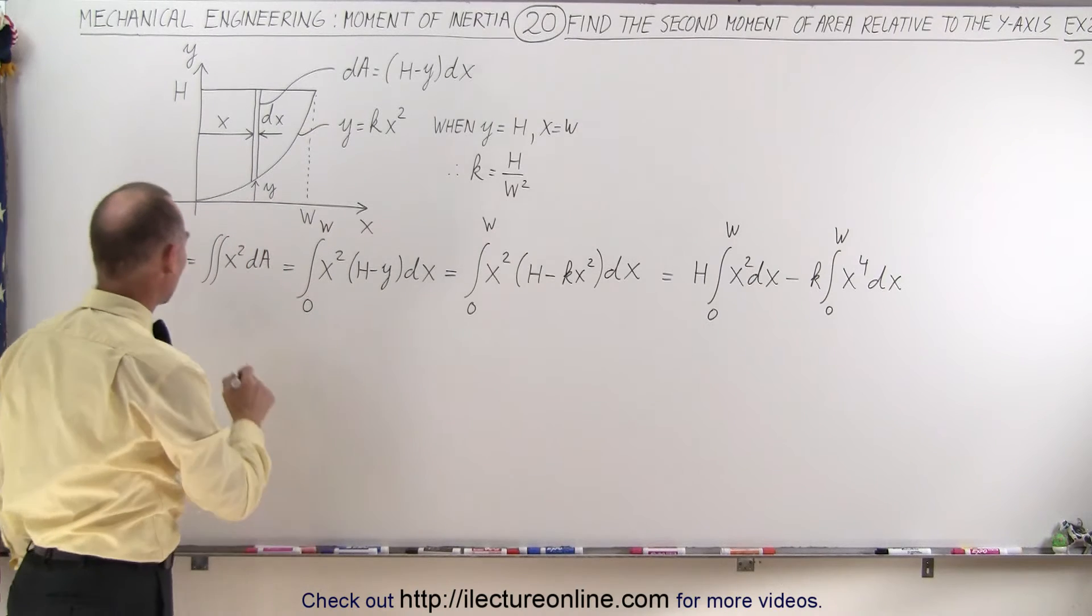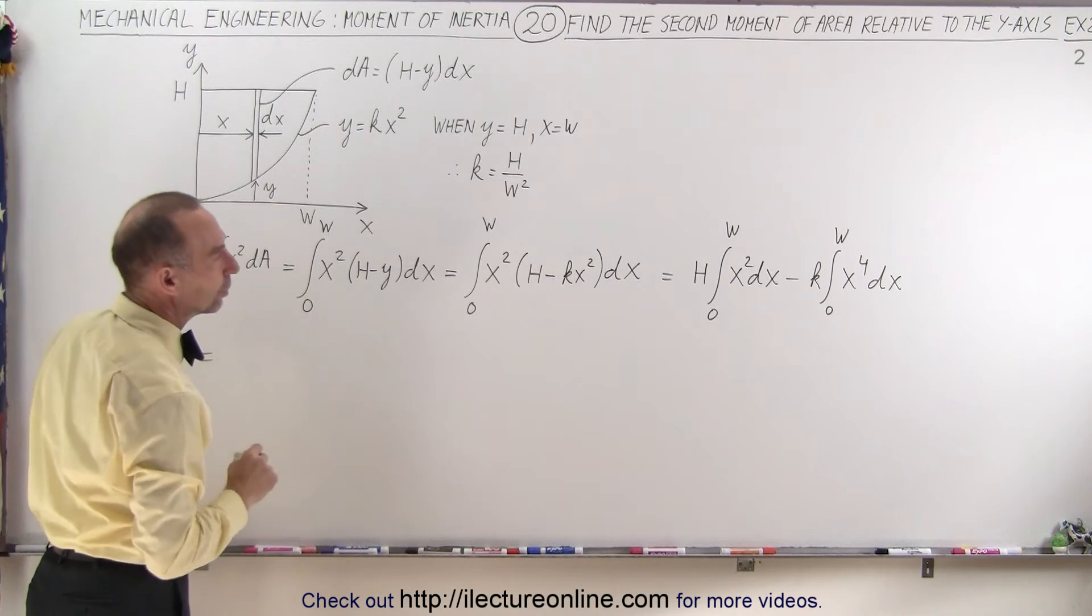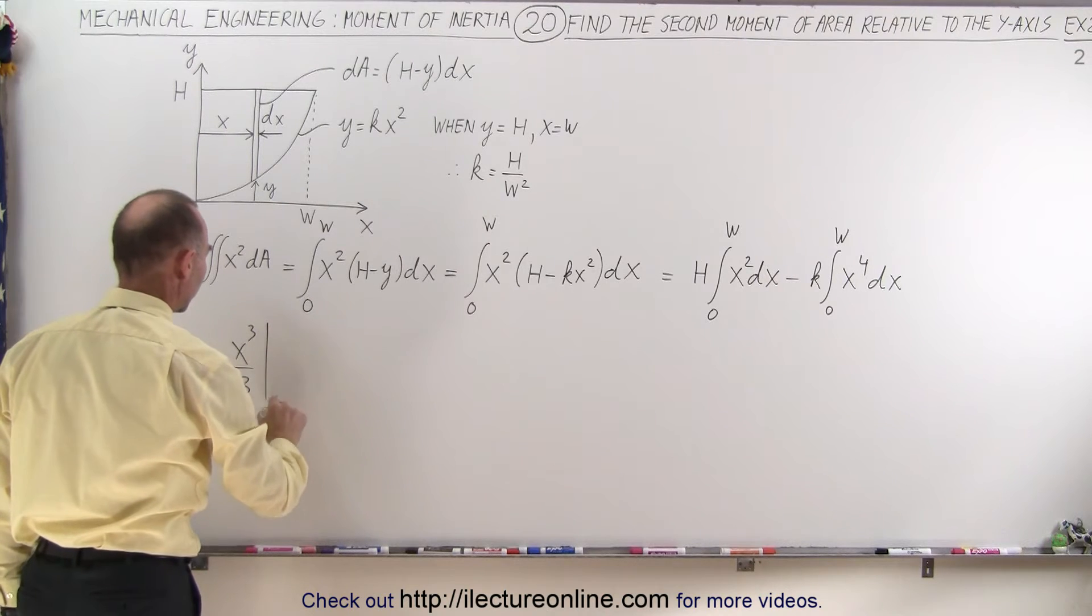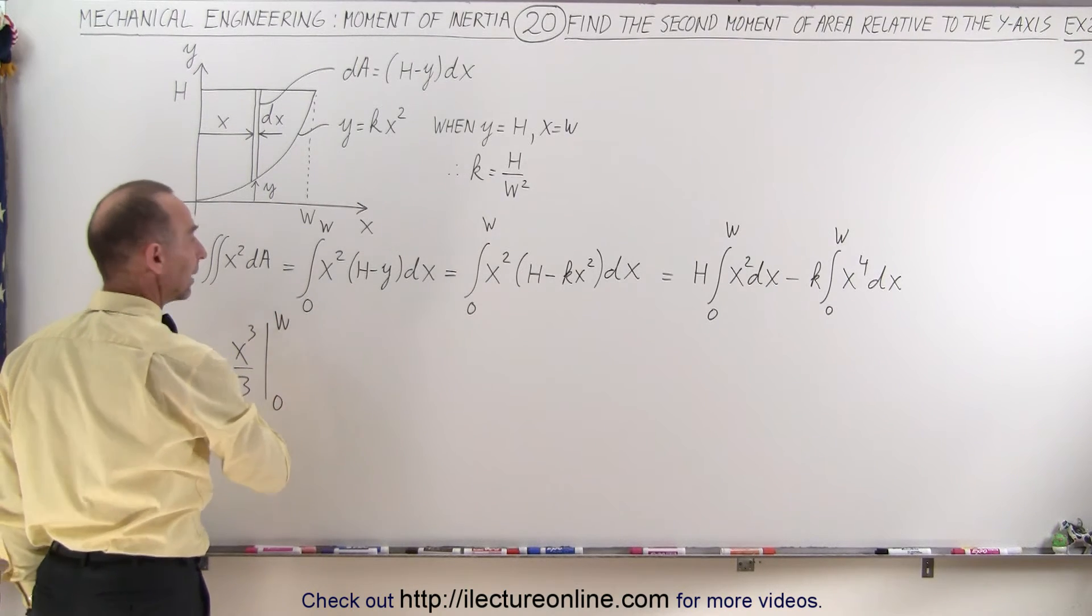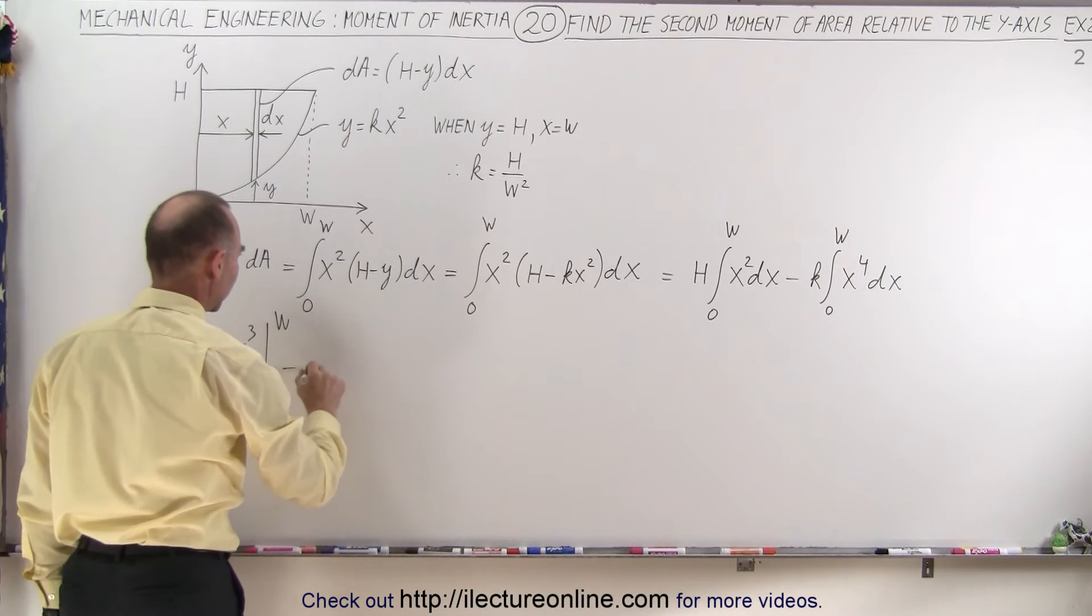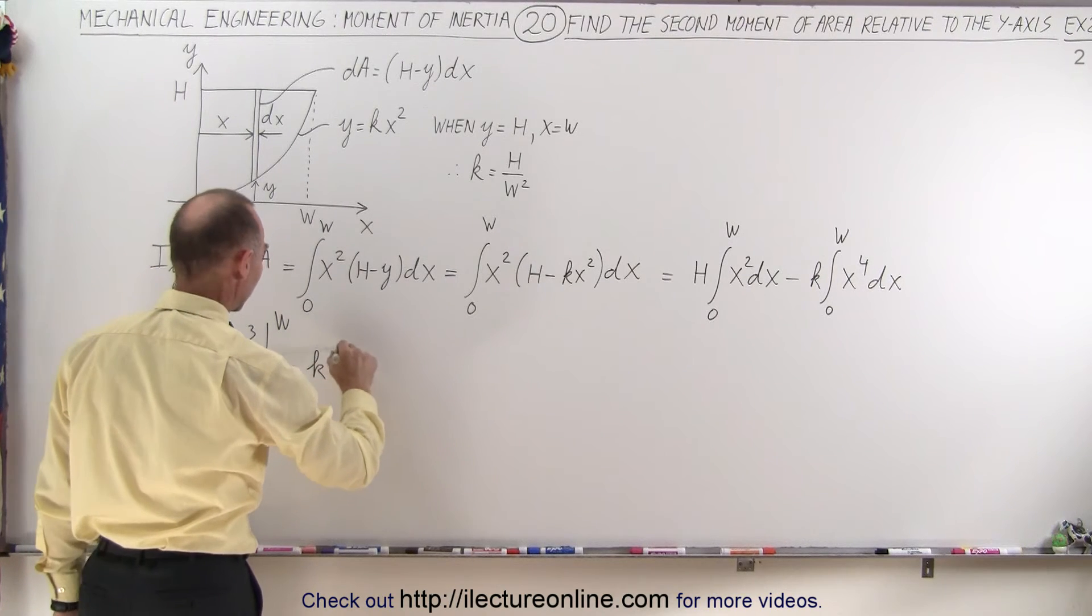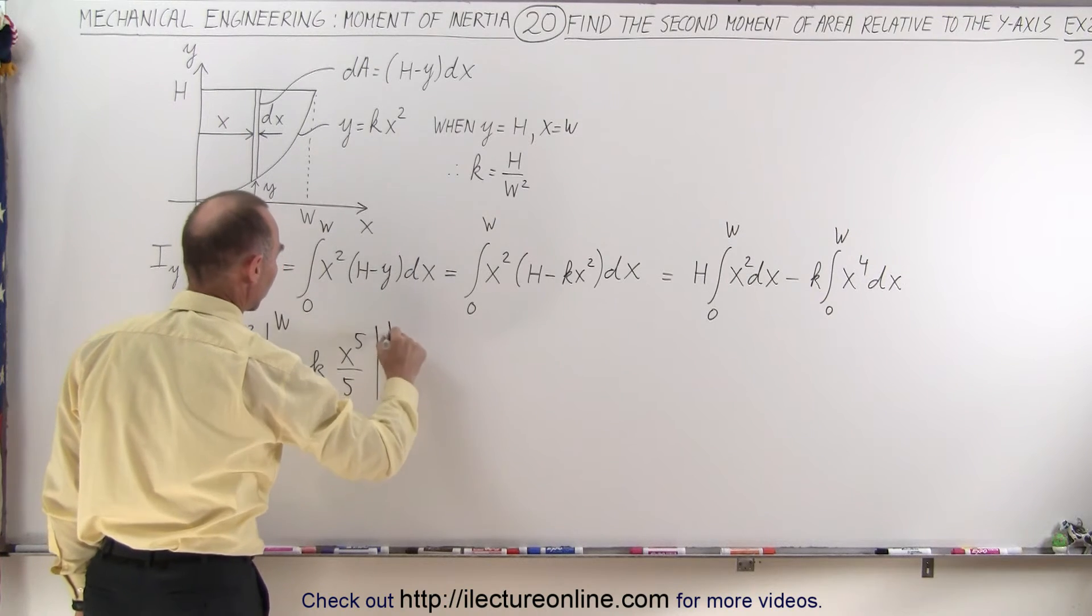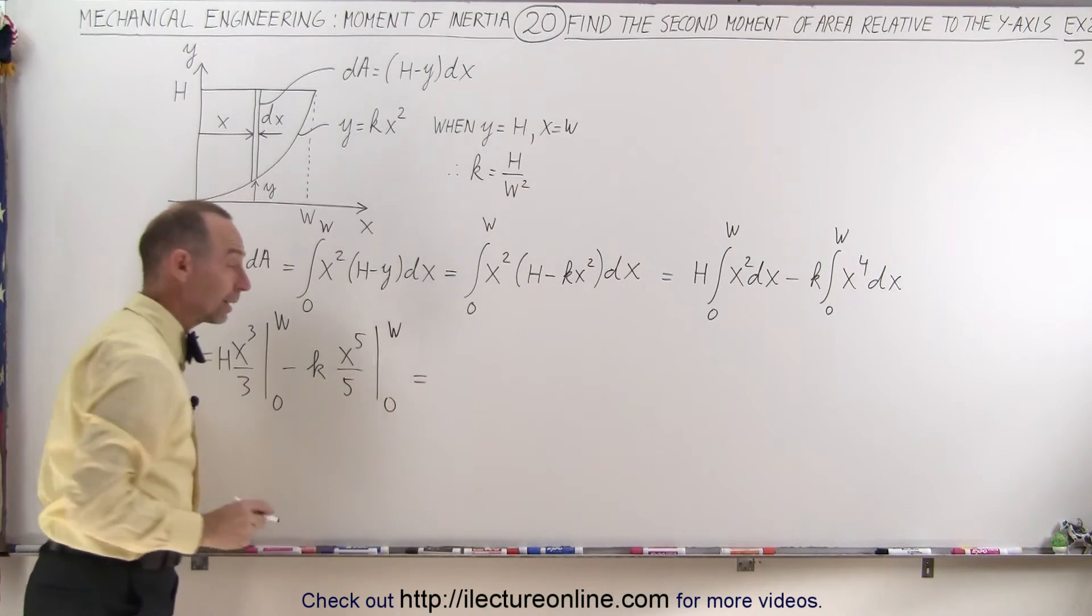If we now integrate both of those, we get the following: the first integral is x cubed over 3 evaluated from 0 to w, and we have the h there, minus k times x to the fifth over 5 evaluated from 0 to w.